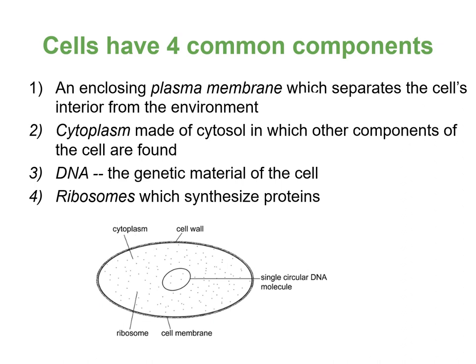All cells have four common components, whether they are prokaryotic or eukaryotic. Eukaryotic cells have more, but all cells share these four things. First, they have a plasma membrane — also called cell membrane or phospholipid bilayer membrane — which separates the cell's interior from the environment. Second, inside we have the cytoplasm, which is made of cytosol — essentially an aqueous solution that holds all the other components of the cell.